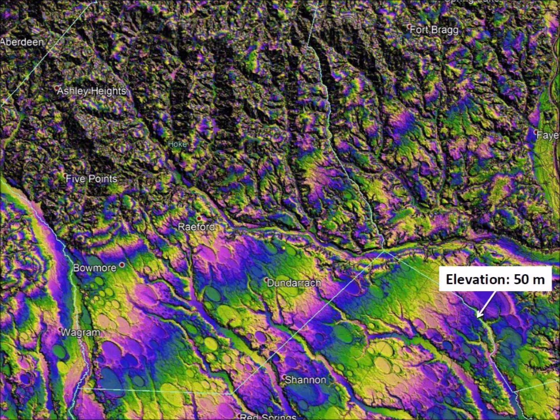The topology of the LiDAR images is enhanced with colored contour lines. The blue contour line highlighted here corresponds to 50 meters above sea level. The distance between the 50 meter and 60 meter contour lines is approximately 11 kilometers, which is a change of elevation of only 10 meters in 11 kilometers. The terrain is virtually flat.